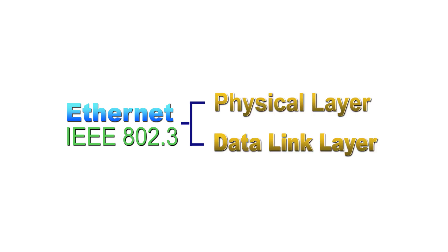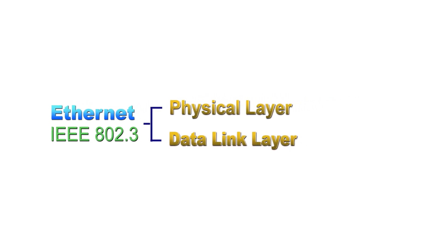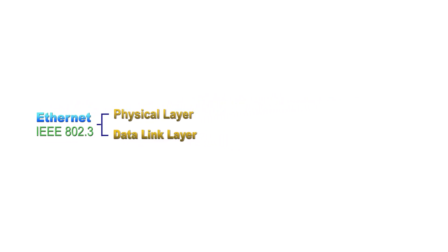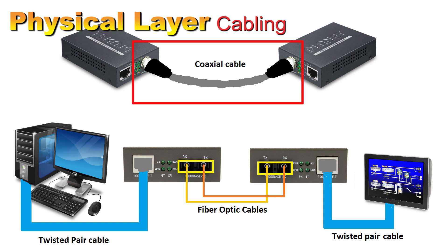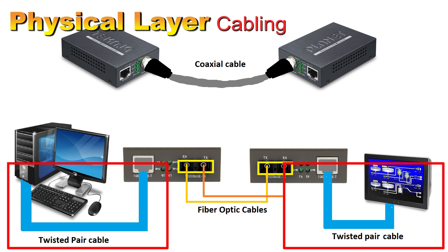The physical layer consists of two components: cabling and devices. Ethernet cables come as coaxial cables, which are not very common except in older installations, twisted pair cables, and fiber optical cables.